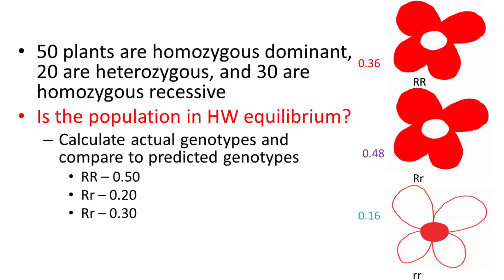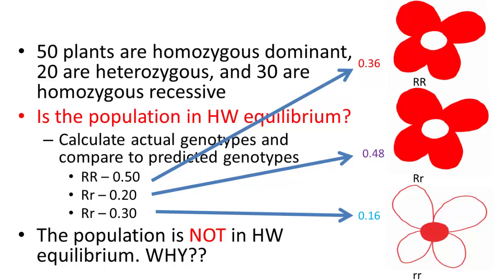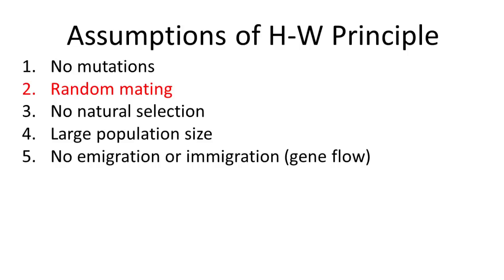We have 0.5, 0.2, and 0.3. Our originals were 0.36, 0.48, and 0.16. So you would say they are not in Hardy-Weinberg equilibrium. Something is going on—it's evolving in some way. And there are five ways in which it can evolve, or five assumptions of the Hardy-Weinberg principle.